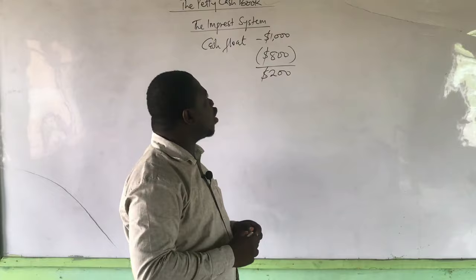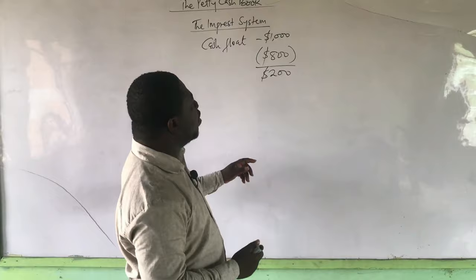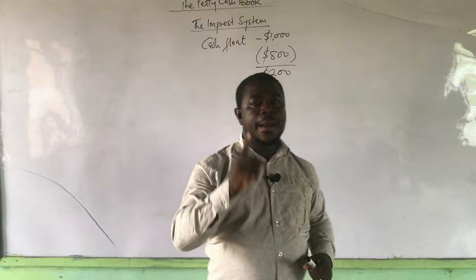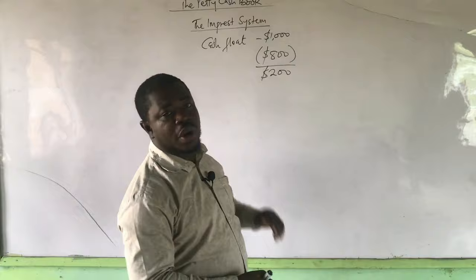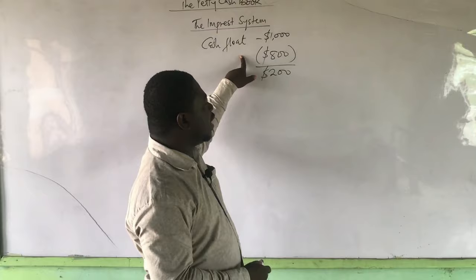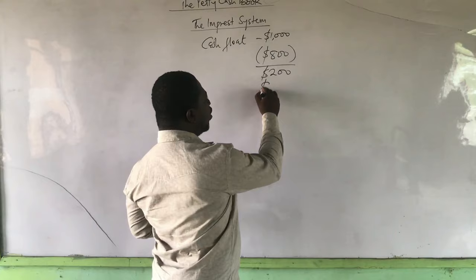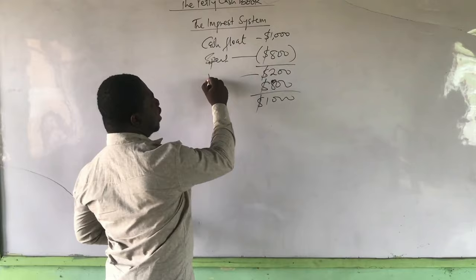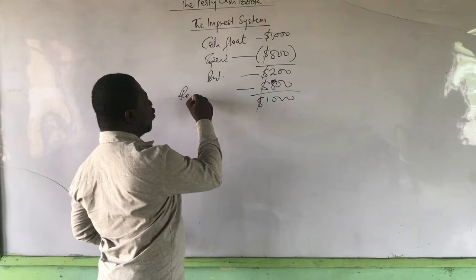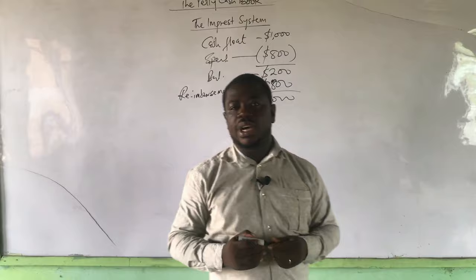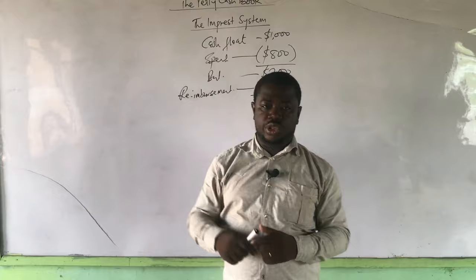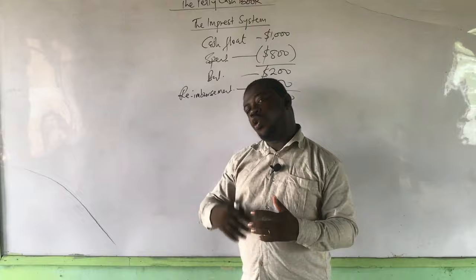When starting a new month, you are supposed to get a reimbursement — you are given back only the amount you have spent. You are not given the full $1,000 again. If you spent $800 and are left with $200, you are given back $800 to restore you to $1,000 and begin a new month. So reimbursement is when you are given back the amount you spent from your cash float, restoring you to the original float value to begin a new period.